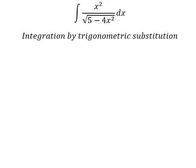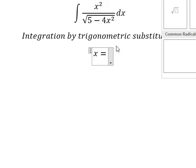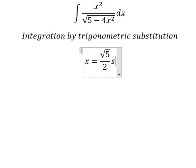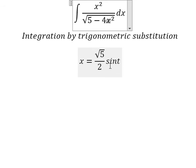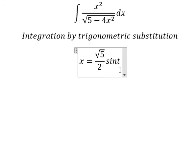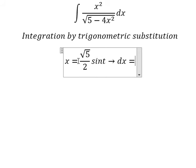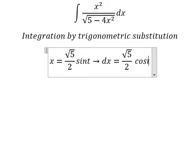I will put x equals to the square root of 5 over 2 times sin(t). If I substitute this in, we have 5 over 4 sin²(t). Number 4 and number 4 cancel, number 5 and number 5 we can factorize, giving 1 minus sin²(t), which we change to cos²(t). Then we simplify the square root, and for dx we take the first derivative of both sides, giving us cos(t) dt.